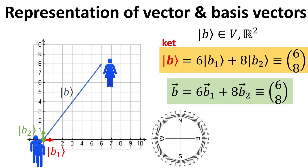Here, b-ket belongs to a two-dimensional real vector space. In order to convey to Alice her location relative to Bob, Bob would first have to tell Alice his coordinate system, or similarly his basis vectors. In this example, his basis vector b1 would be a unit vector pointing towards east, while b2 points towards north. Then, the vector b would be 6 times b1 plus 8 times b2, as shown in the yellow box.